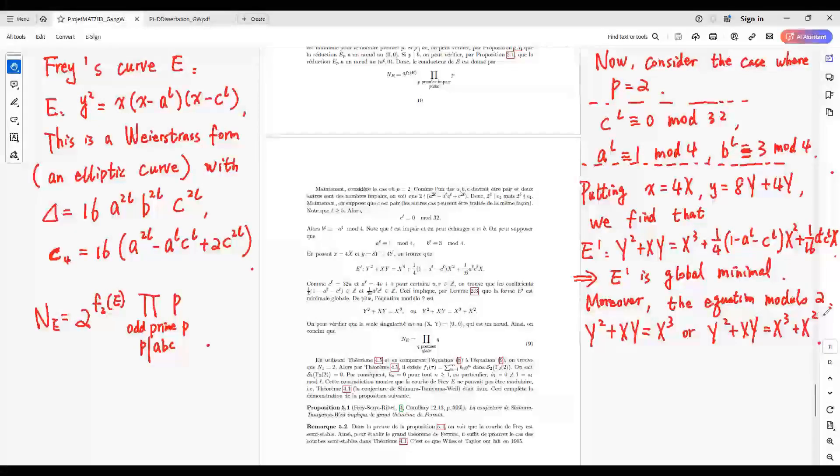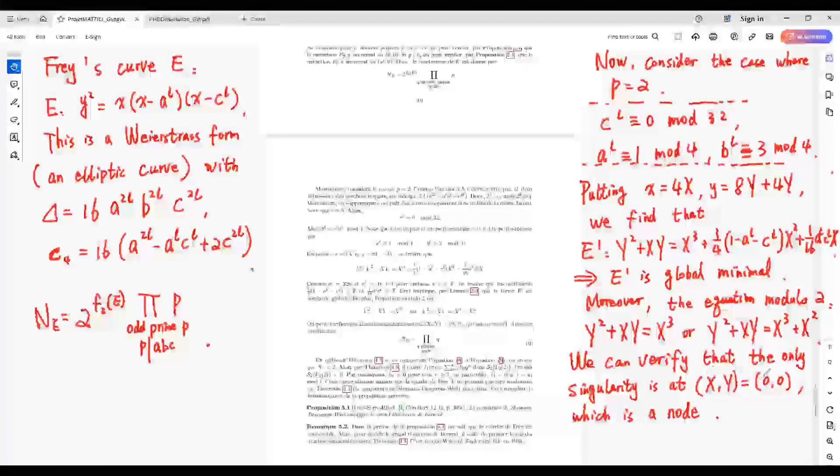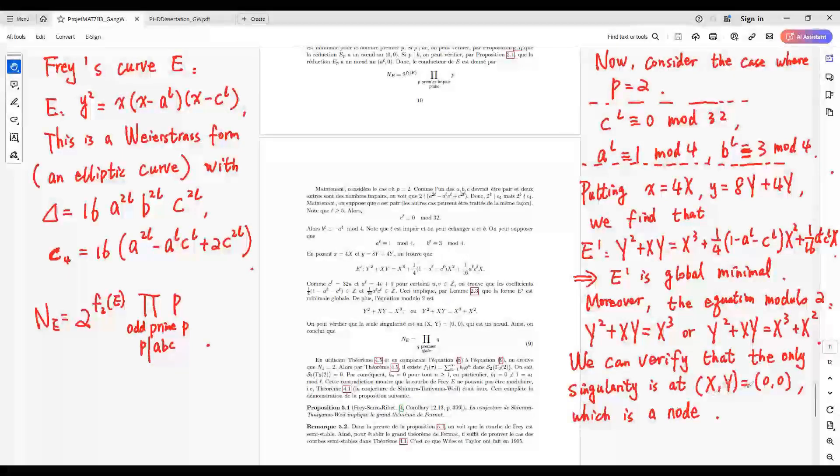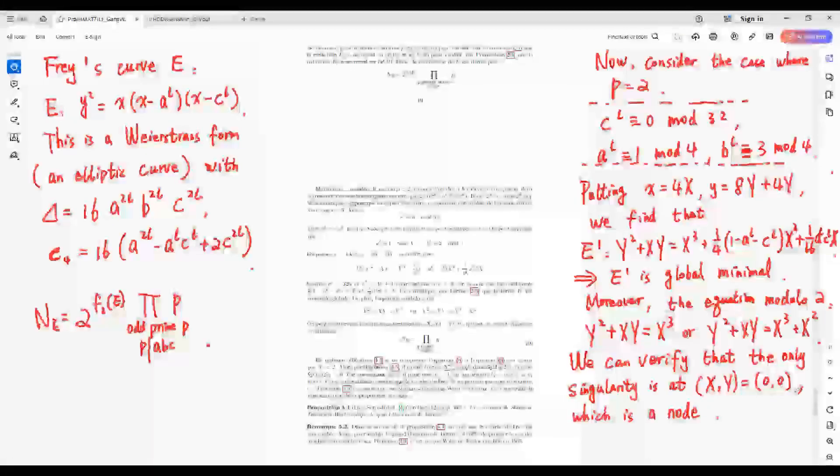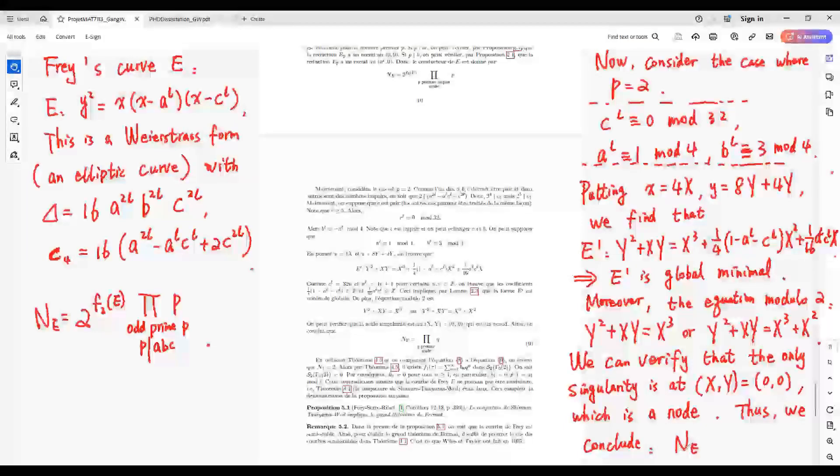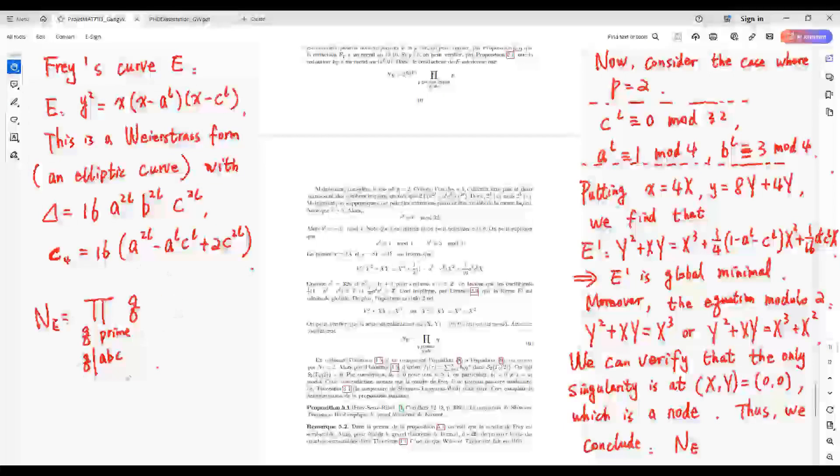Furthermore, the equation modulo 2 is given by this one or this one. We can verify that the only singularity is at (x, y) equals (0, 0), which is a node. Thus, by this one, we obtain the conductor of E, N_E, is given by this one.